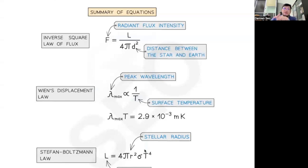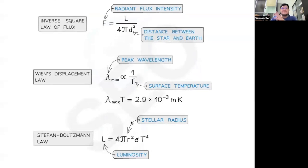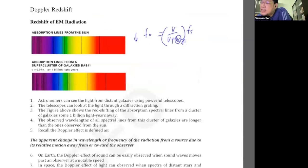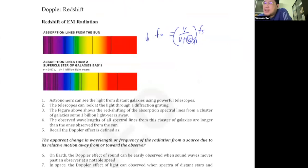So these are your three formulas — they're all related: the radiant flux intensity formula F = L/4πr², Wien's Displacement Law λmax × T = constant, and Stefan-Boltzmann's Law L = 4πr²σT⁴. Now for the last two formulas.